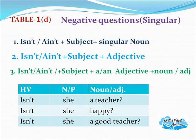Table 1D — negative questions in singular: When to use them? If someone says she is a teacher, or someone says she isn't a teacher, and you have a doubt, you ask: Isn't she a teacher? Isn't she happy? Isn't she a good teacher?